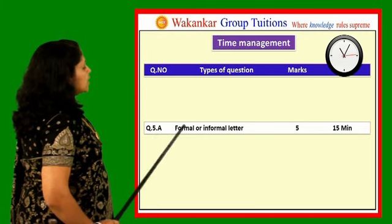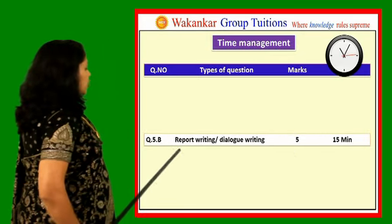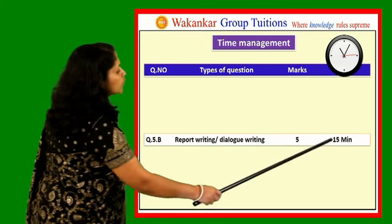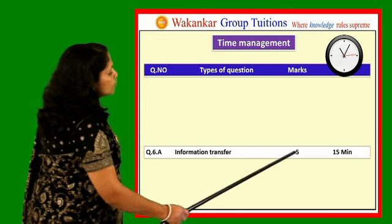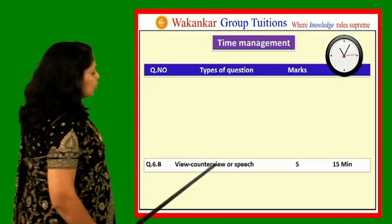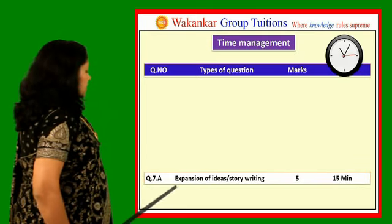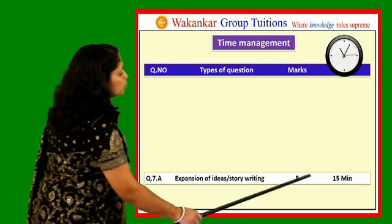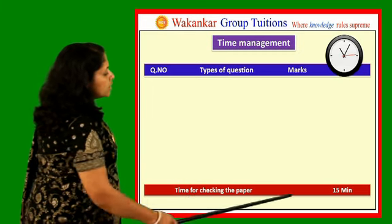Question 5A is a formal or informal letter, which is of 5 marks; you should complete in 15 minutes. Question 5B is either report writing or dialogue writing, which is of 5 marks; you should complete in 15 minutes. Question 6B is either view or counter view or speech writing, which is of 5 marks; you should complete in 15 minutes. Question 7A is expansion of ideas or story writing, which is of 5 marks; you should complete in 15 minutes. Time remaining for checking the paper is 15 minutes.